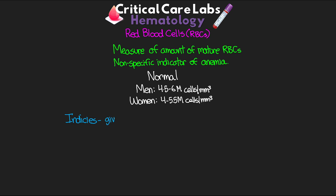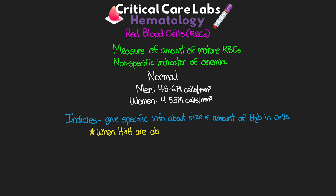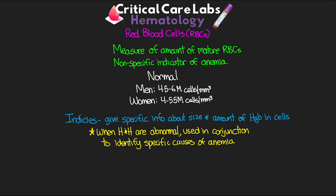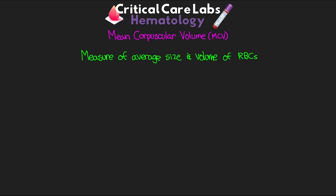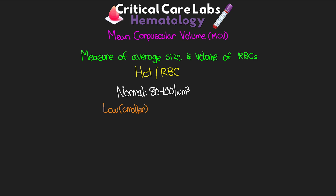The big thing where RBCs come in to help diagnose what's going on is when we look at the various indices. These indices give us specific information about the red blood cells, such as their size and concentration of hemoglobin in each cell. When hemoglobin and hematocrit are abnormal, we want to use these indices to help identify the specific causes of anemia. The first is the mean corpuscular volume, or MCV — a measure of the average size and volume of RBCs. We get this by dividing the hematocrit by the RBC count. Normal is 80 to 100 per micrometer cubed. Lower values indicate microcytic anemia, and higher values indicate macrocytic anemia.